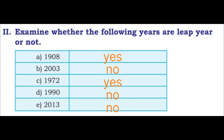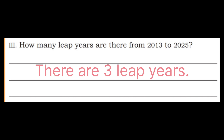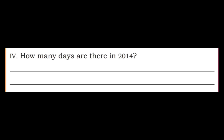Third question: How many leap years are there from 2013 to 2025? There are three leap years: 2016, 2020, and 2024. Fourth question: How many days are there in 2014? 365 days, because 2014 is not a leap year.